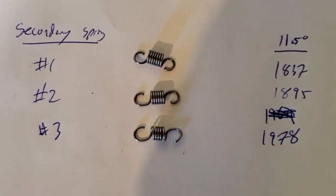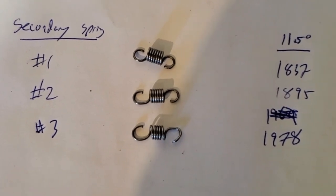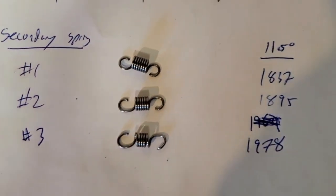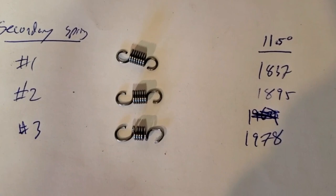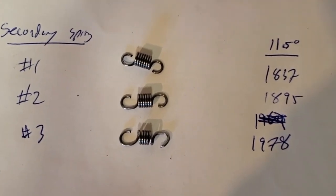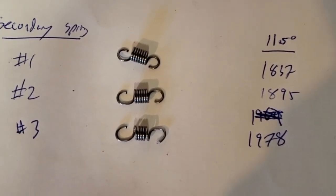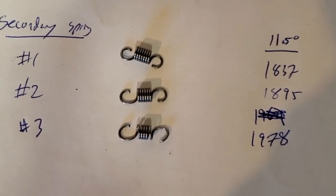As we can see here, the three secondary springs that I created for this distributor and their speeds. The first one was 1837, the second one was 1895, and the third one reached 1978 at 11 and a half degrees.